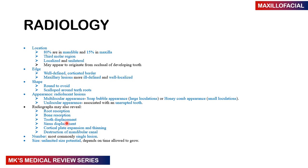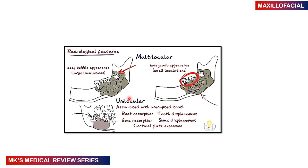Most commonly a single lesion is seen, with unlimited size potential. The honeycomb appearance refers to small loculations, while the soap bubble appearance refers to larger loculations — both are radiolucent on x-ray. The unilocular type may be associated with an unerupted tooth, with accompanying root resorption, bone resorption, tooth displacement, sinus displacement, and cortical plate expansion.